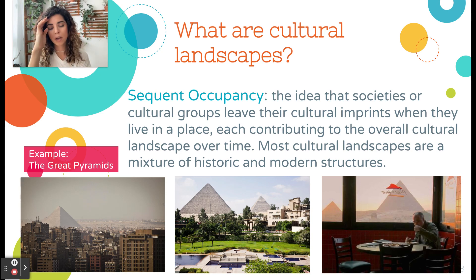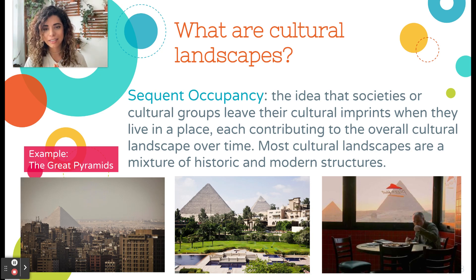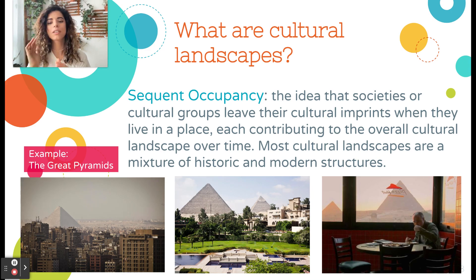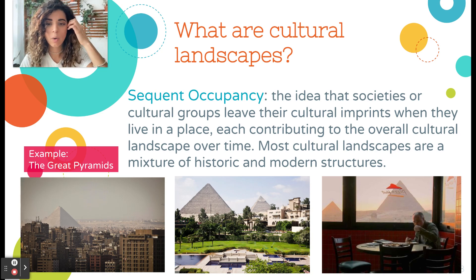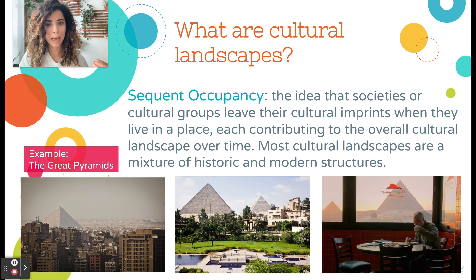Here we have the Great Pyramids as an example. Looking at the three different images, each includes the Great Pyramids. Why would this be an example of sequent occupancy? The pyramids represent evidence of a previous society, surrounded now by a modern urban landscape — showing multiple layers of human occupation over time.